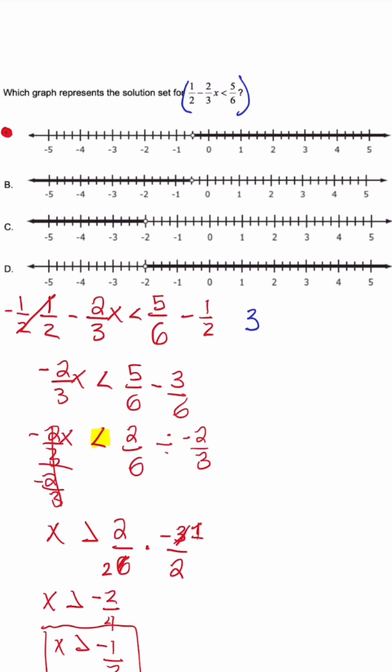So when we multiply 6 by one half this is going to turn into 3, minus, and then when we multiply 6 times 2 we get 12. 12 divided by 3 is 4, so this is minus 4x. And on the opposite side this is going to be less than 5 because the 6s cancel. Now when I subtract 3 we have negative 4x is less than 2.